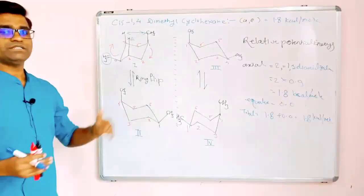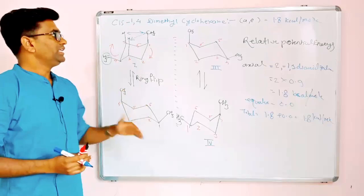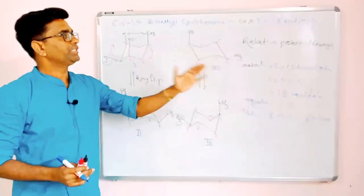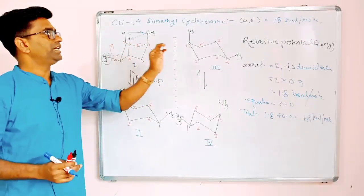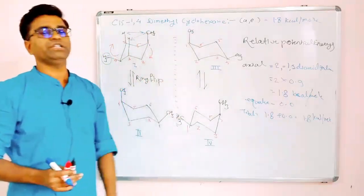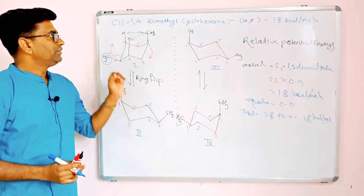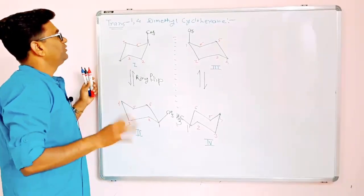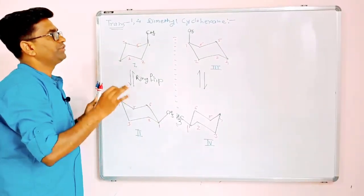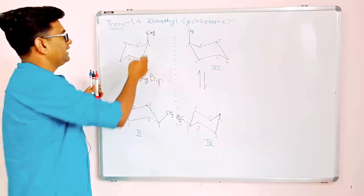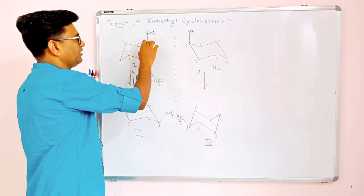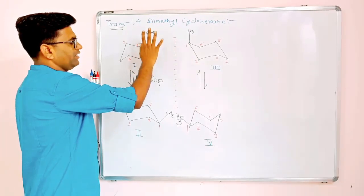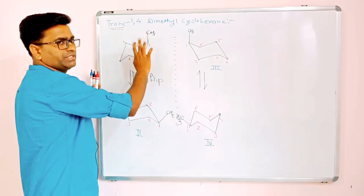As the energy of the molecule rises, the molecule becomes unstable. So we have learned the geometrical isomerism, optical isomerism, and relative potential energies of cis-1,4-dimethylcyclohexane in its axial-equatorial form. Now we will learn the stereochemistry of trans-1,4-dimethylcyclohexane. While writing the structure, write this methyl first, then writing all the structures will be easier.